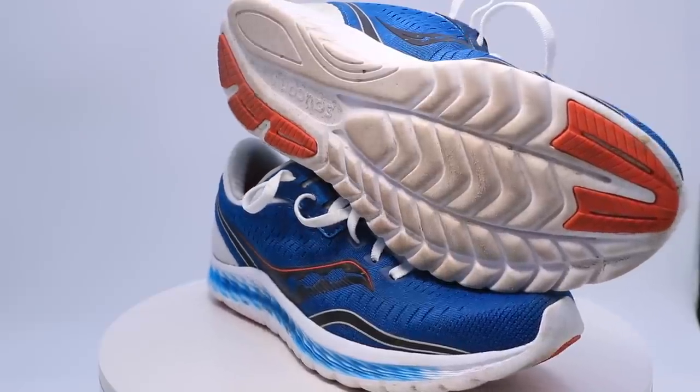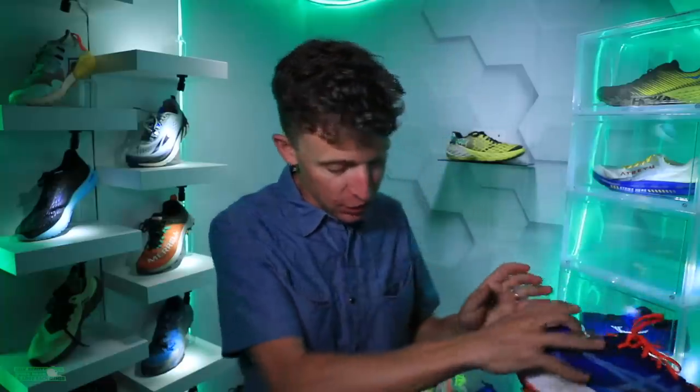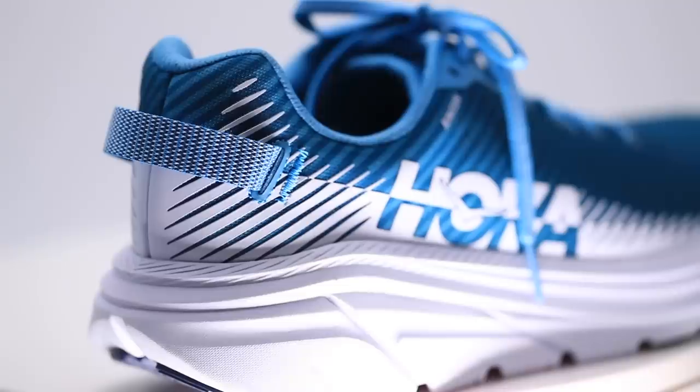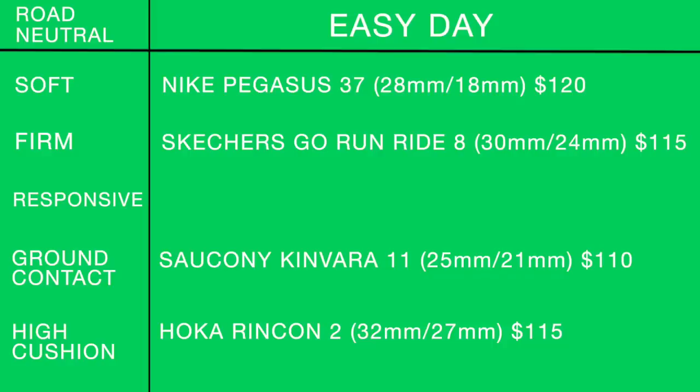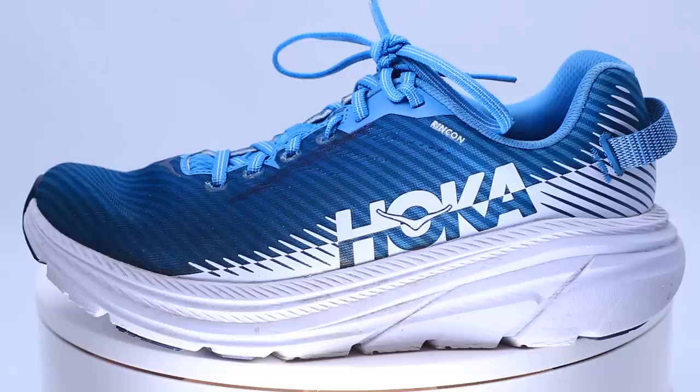For high cushion easy day shoe: the Hoka Rincon 2 — or Rincon 1, frankly. Butter my bread, I really enjoy this shoe. It's almost a tweener, meaning it could be an easy day shoe or potentially a tempo day shoe because it is so lightweight. 32mm in the heel, 27mm in the forefoot, $115. The Hoka Rincon 1 or 2 will both do the trick.